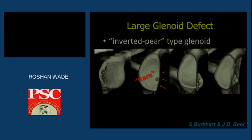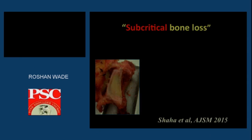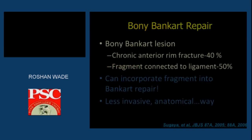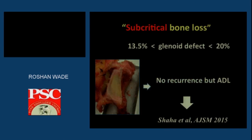In rare scenarios where there is significant bone loss, one cannot do arthroscopic Bankart repair and will require a Latarjet type of procedure. However, where the glenoid defect fragment is retained, one can do an arthroscopic Bankart repair with suture anchors. One must understand subcritical bone loss, described by Shasha, defined as between 13% to 20% of glenoid defect, where recurrence rate is associated with the amount of anterior rim bone loss.